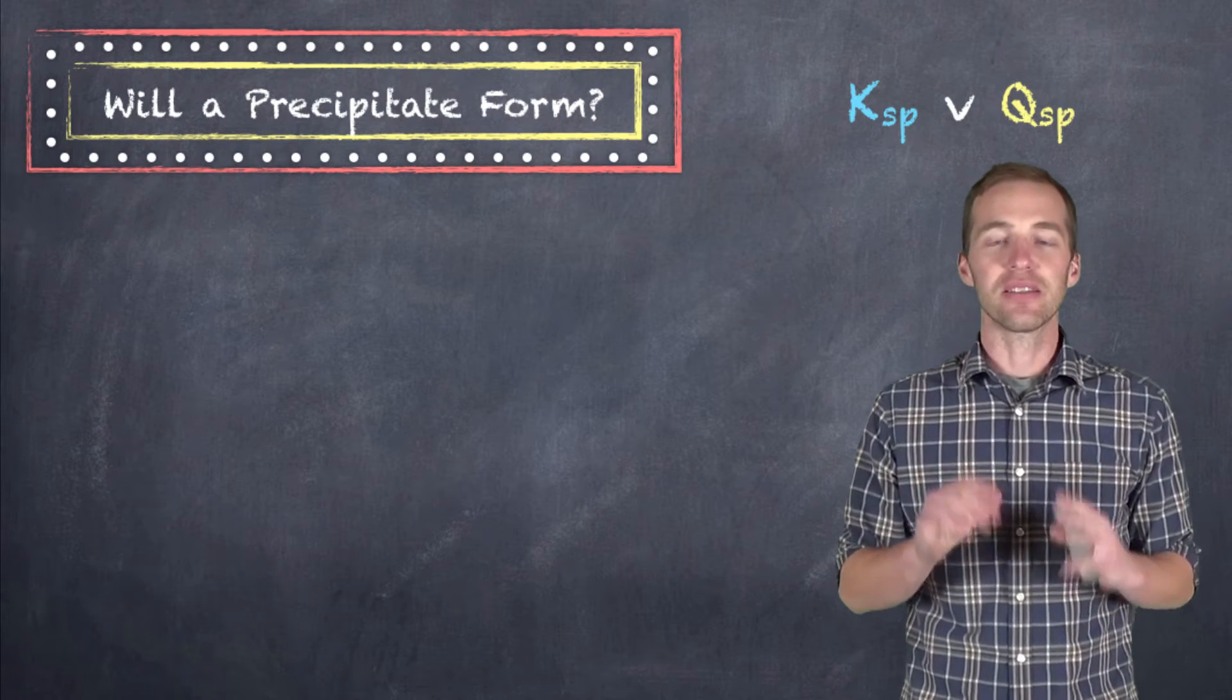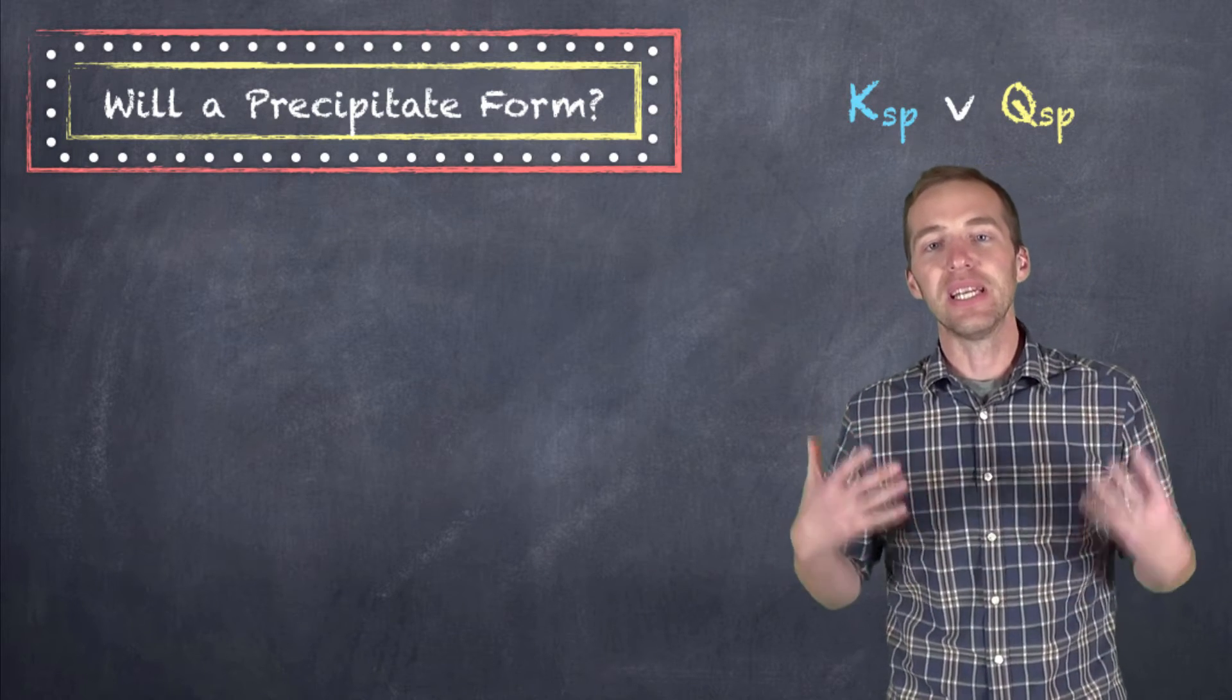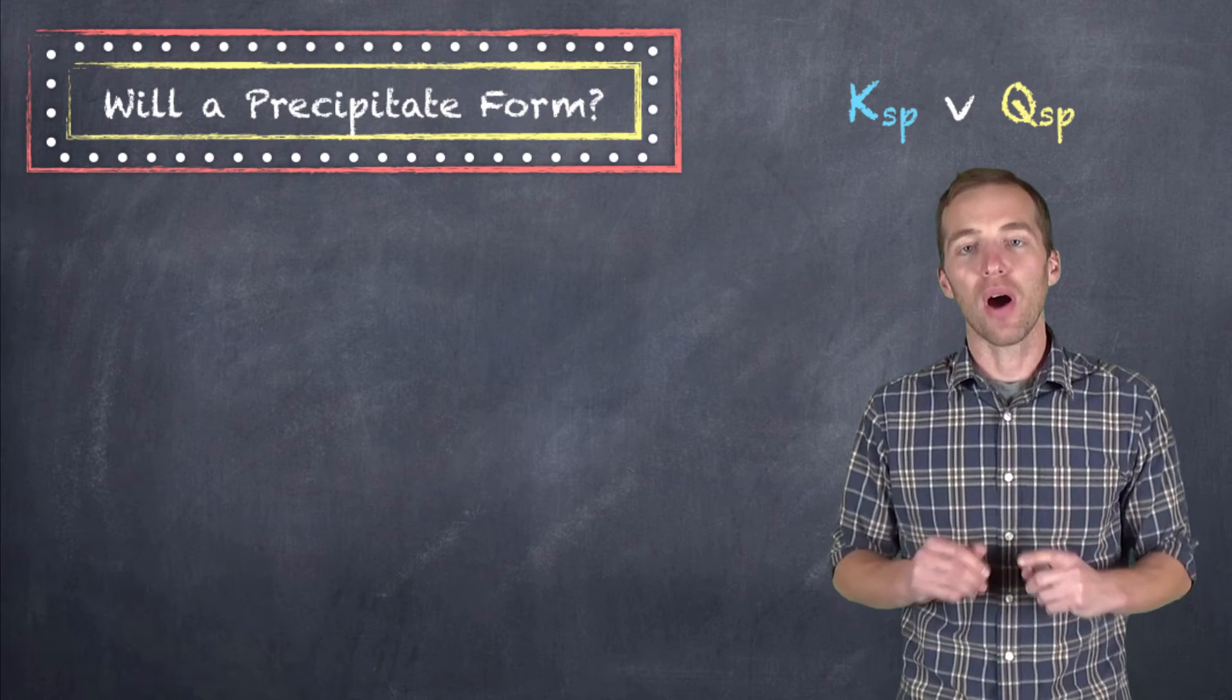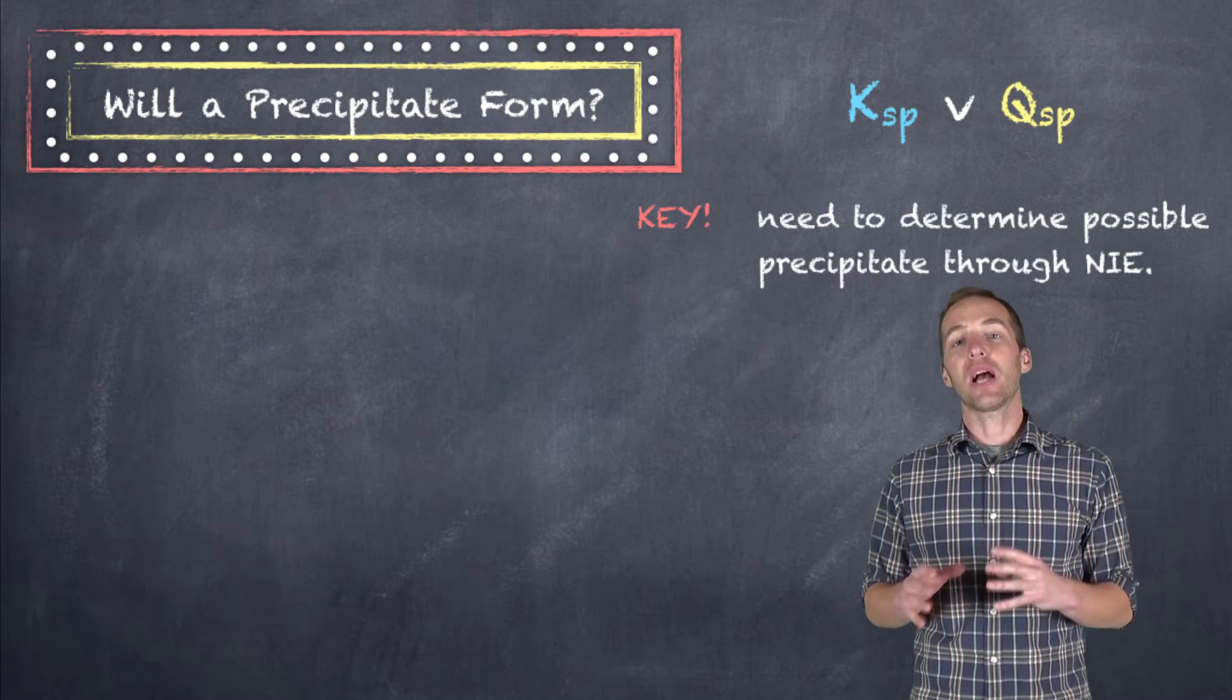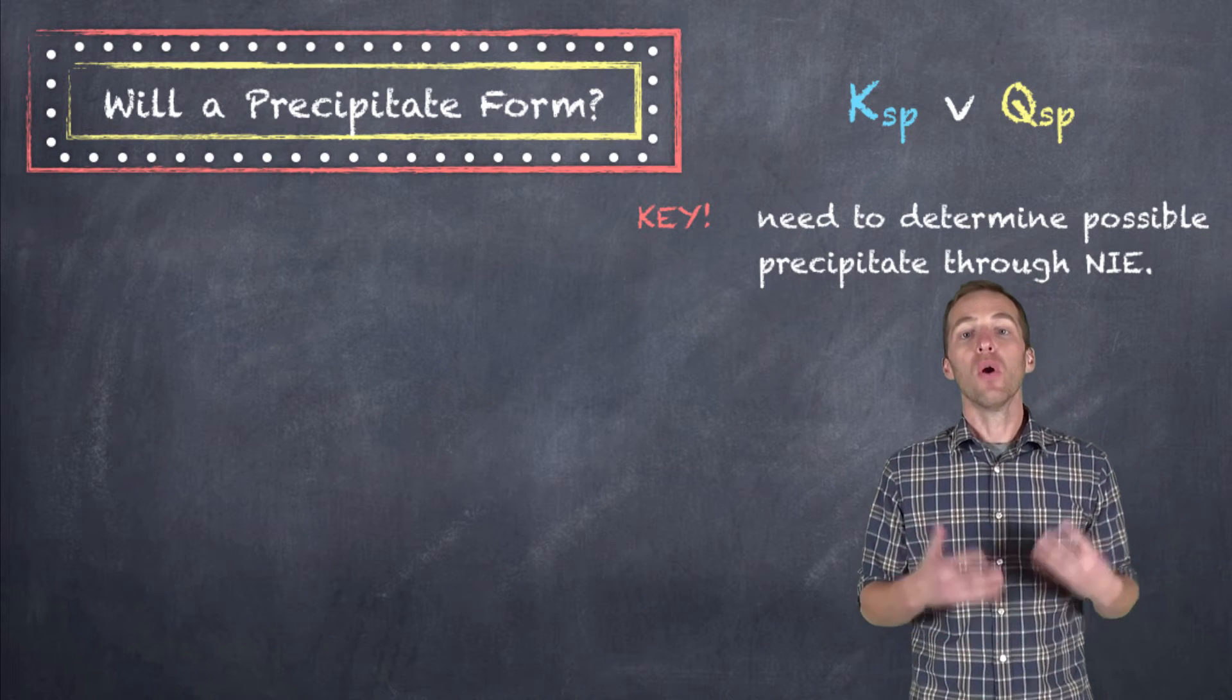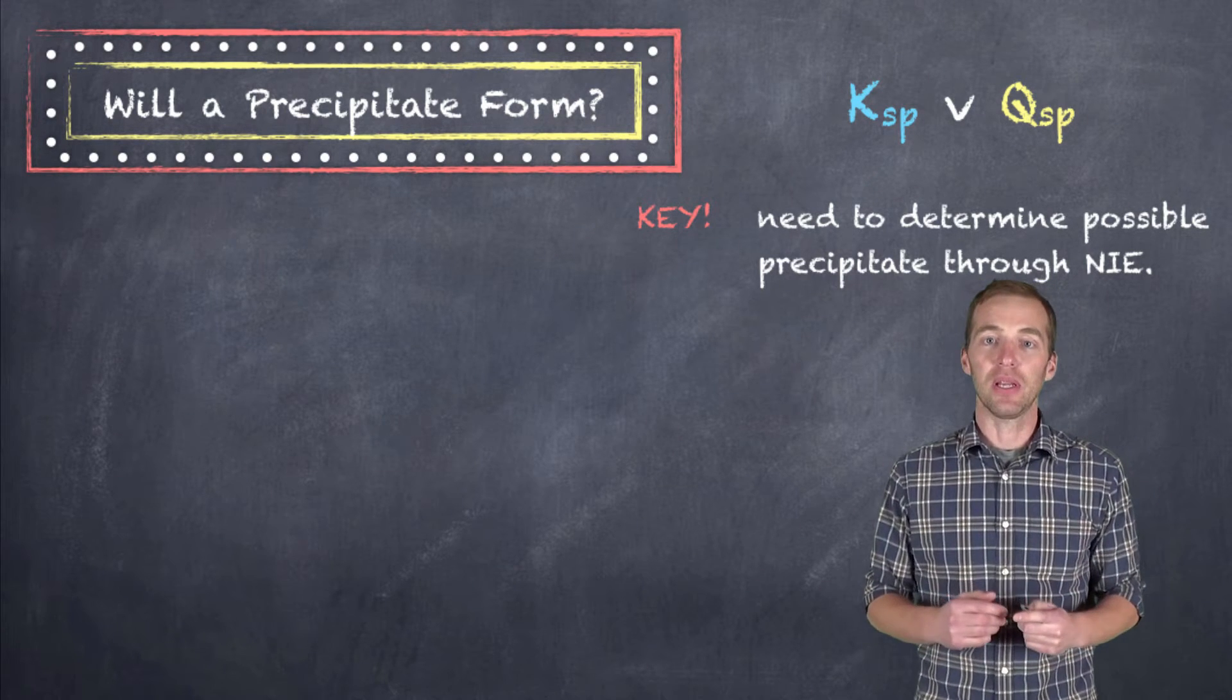Now, the key here is that we need to determine what the possible precipitate is going to be. So in order to do that, we need to come up with a net ionic equation in order to figure out what solid could possibly be formed. Because we're not going to worry about anything that's aqueous here. We need to figure out what the solid is going to be, what our precipitate is going to be.